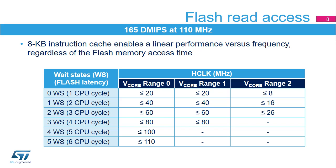Thanks to the instruction cache, the program can be executed with 0 wait states independent of the clock frequency. This provides an almost linear performance in relation to the frequency, with a benchmark result of 165 Dhrystone MIPS at 110 MHz.